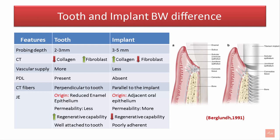The connective tissue fibers are in excess around the tooth and attach onto the cementum; however, the connective tissue fibers around an implant are oriented parallel to the implant. The junctional epithelium around a tooth arises from the reduced enamel epithelium, while that around an implant arises from the adjacent oral epithelium. The junctional epithelium is less permeable around a tooth and more permeable around an implant, has higher regenerative capacity around a tooth, and is well-attached around a tooth compared to poorly attached around an implant.